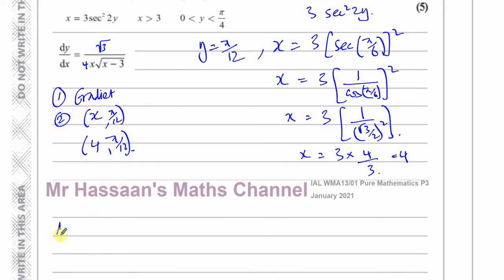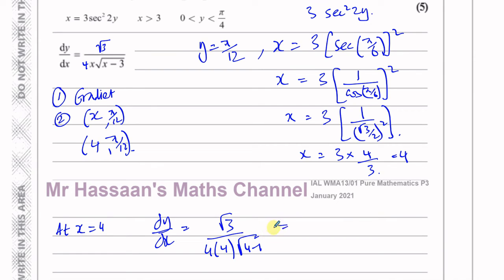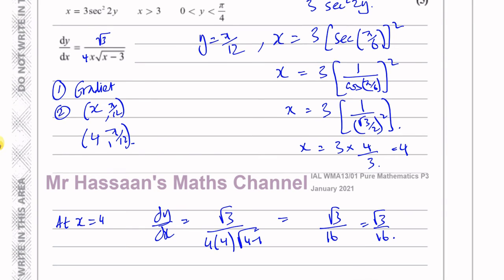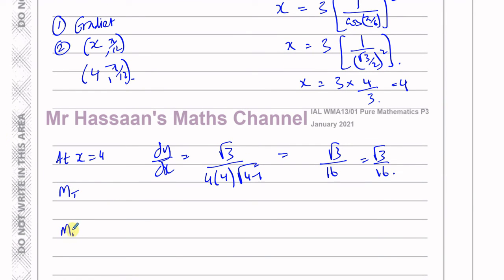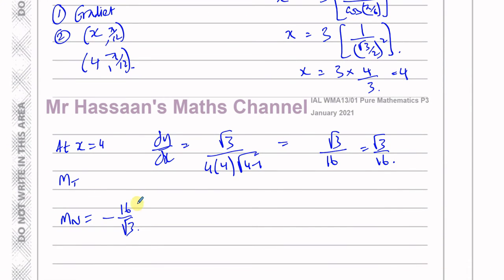To find the gradient, we know dy/dx equals root 3 over 4x times sqrt(x − 3). At x = 4, this is root 3 over 4 times 4 times sqrt(4 − 3) = root 3 over 16 times 1, which is root 3 over 16. That's the gradient of the tangent. The gradient of the normal is the negative reciprocal: −16 over root 3. Rationalising by multiplying top and bottom by root 3 gives −16 root 3 over 3.